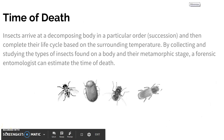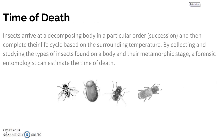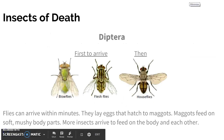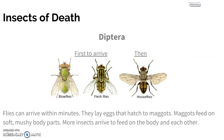The time of death can be determined based on the insects that are at the body. There is a specific succession or order in which flies and beetles will go to a body, so you can estimate the time of death based on what insects are present at that time. Diptera is one of the main insects of death — those are all your flies.